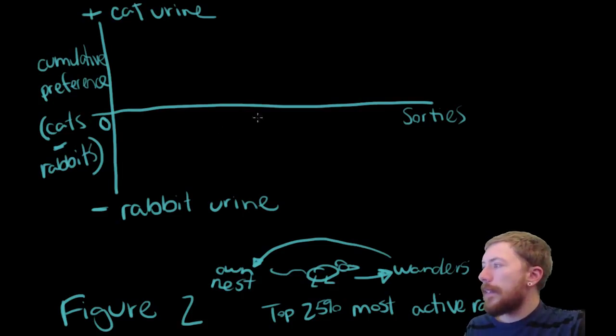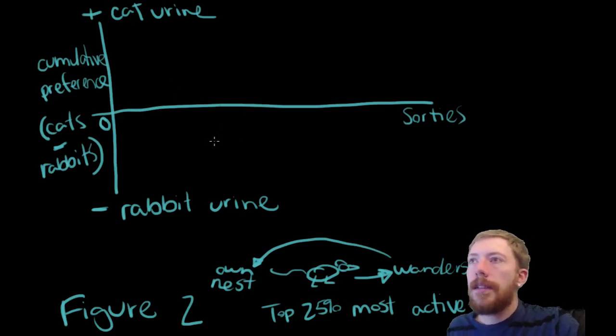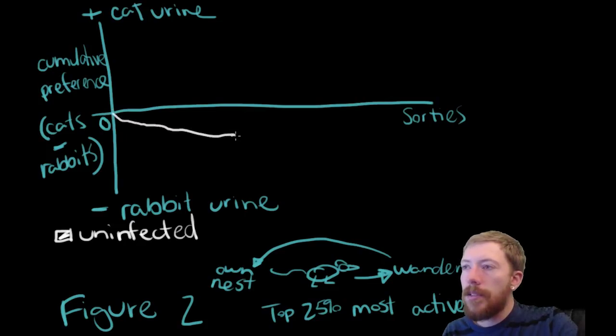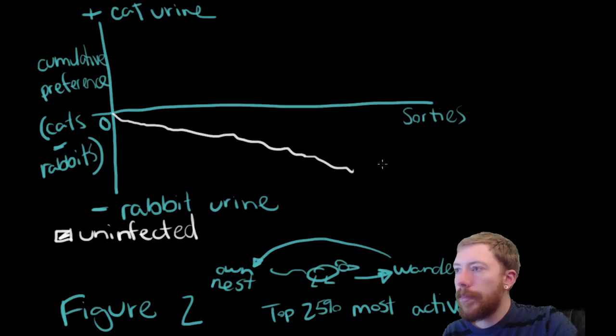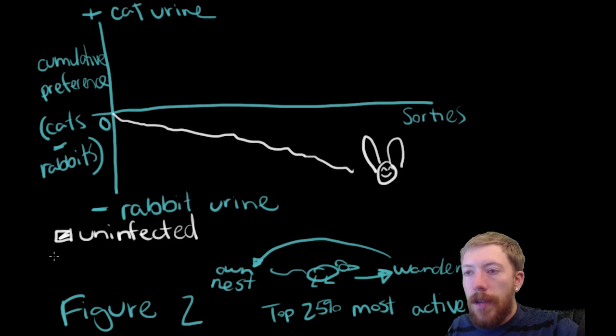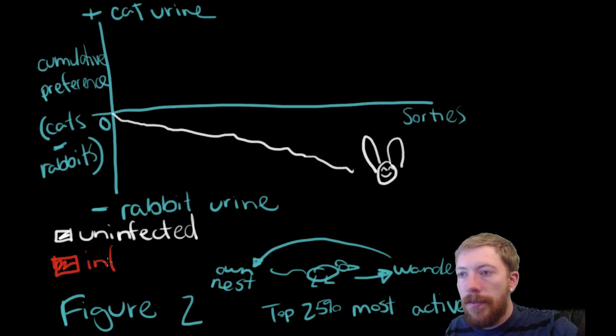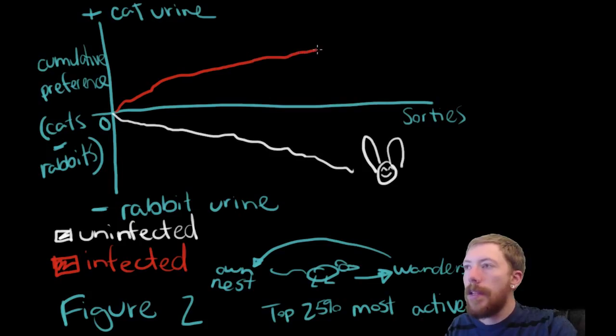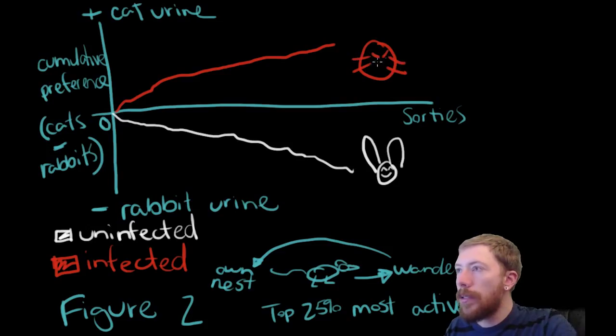So, what we find is that in the, and again, let's get our colors right. So, in white, we are saying that these are, again, uninfected. And what we see is that over time, these rats are spending more of their time with the rabbits. So, now, what happens when we look at the infected rats? These rats are doing almost the exact opposite. Over time, they're spending more of their time visiting the cat urine. And that's so unusual because cats are bad. Because cats eat rats.